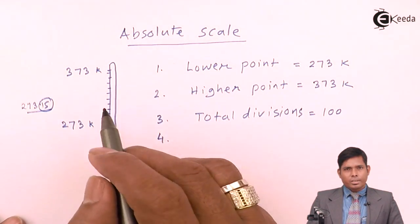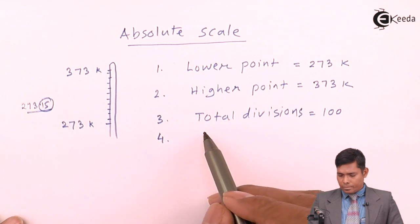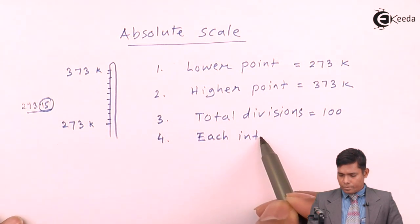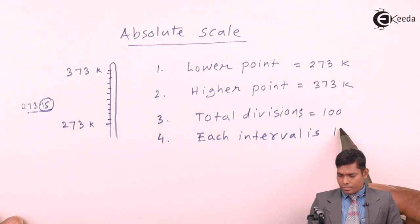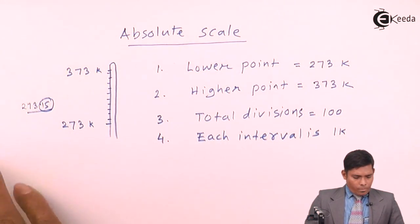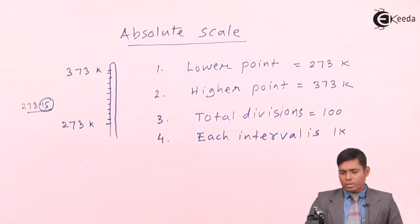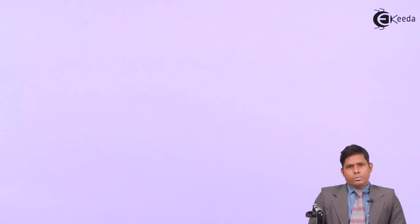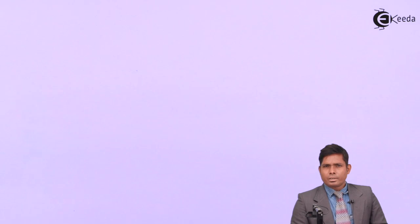Each division or each interval in the absolute scale gives you one Kelvin. We have now discussed all three scales: the Celsius or centigrade scale, the absolute or Kelvin scale, and the Fahrenheit scale. We know the lower point, the higher point, the number of divisions, and what each interval means for each scale.